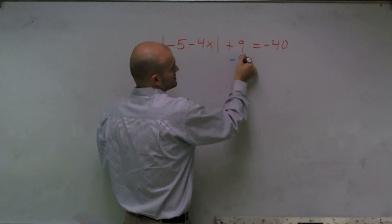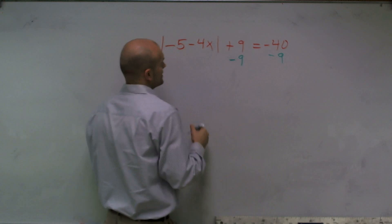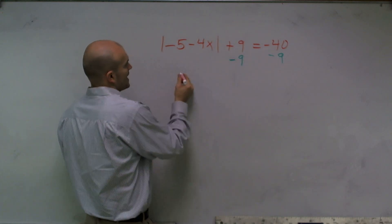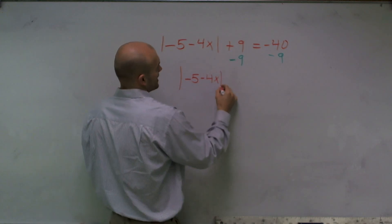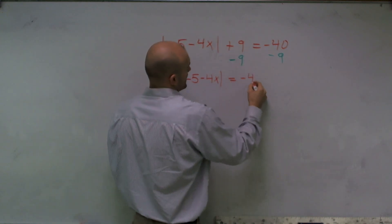So the first thing I'm going to do is subtract this 9 to the other side. Therefore, now I will obtain the absolute value of negative 5 minus 4x equals negative 49.